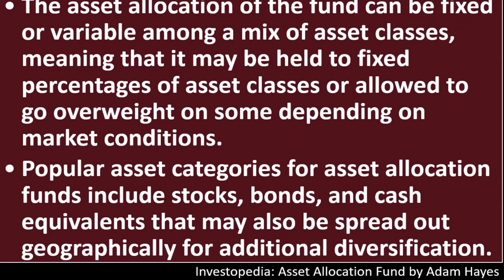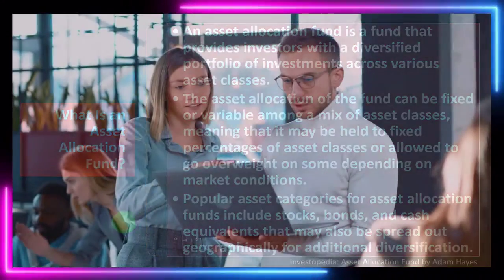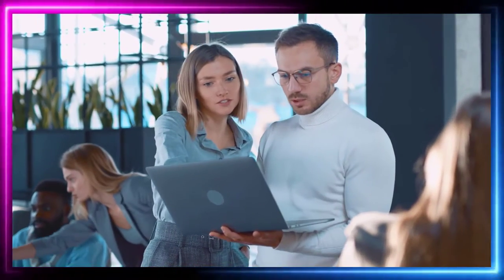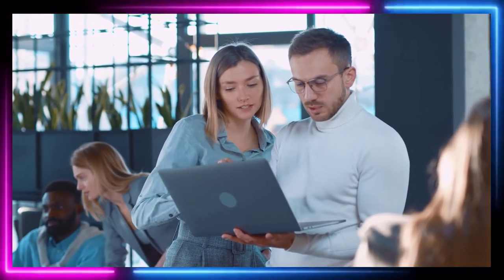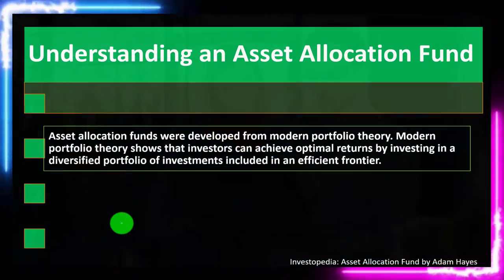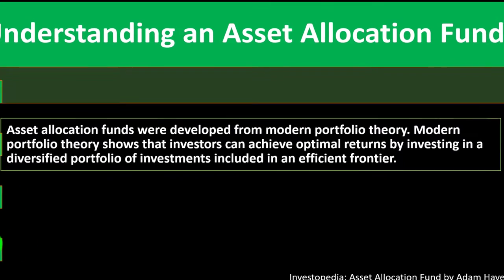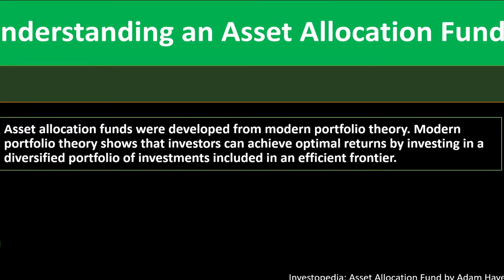Popular asset categories for asset allocation funds include stocks, bonds, and cash equivalents. These may also spread out geographically for additional diversification. So we can diversify between different types of assets, then spread within each of those categories, and then by location to further diversify.